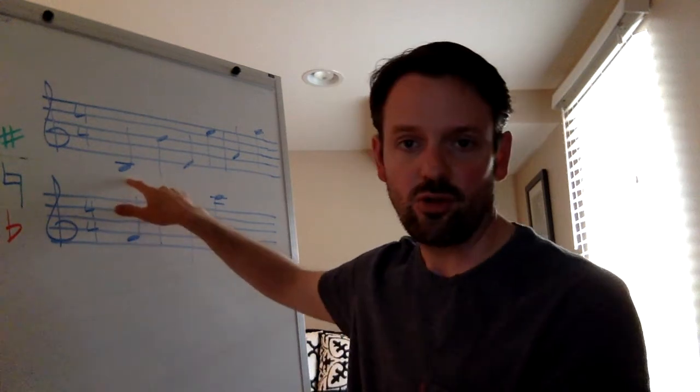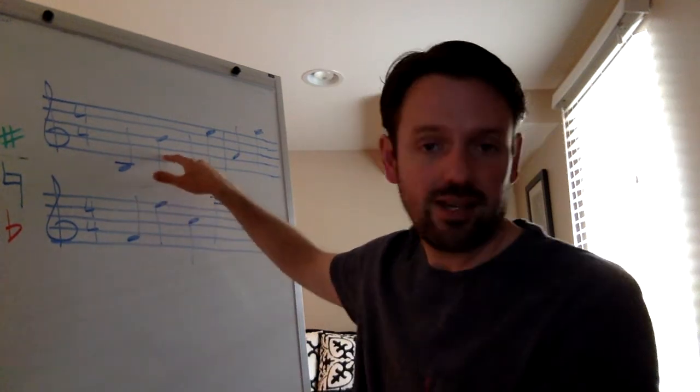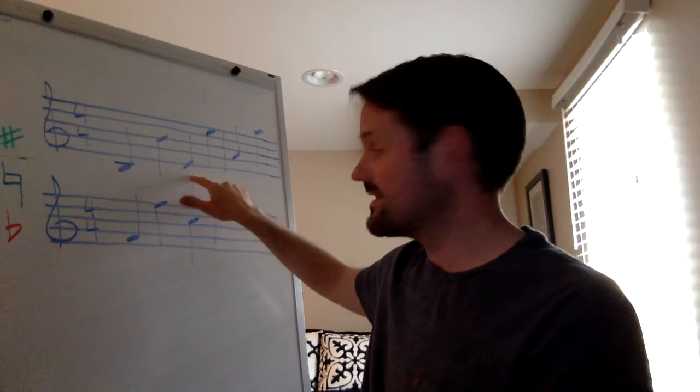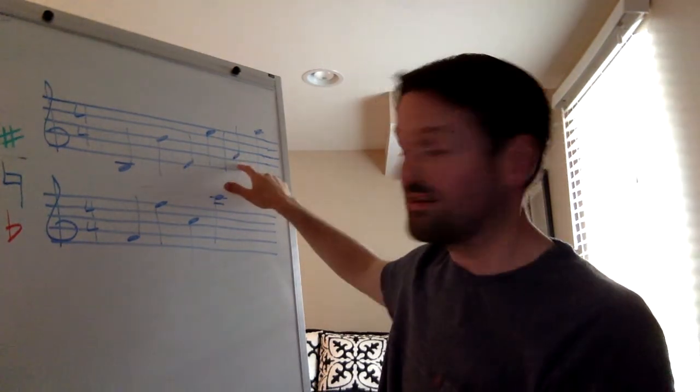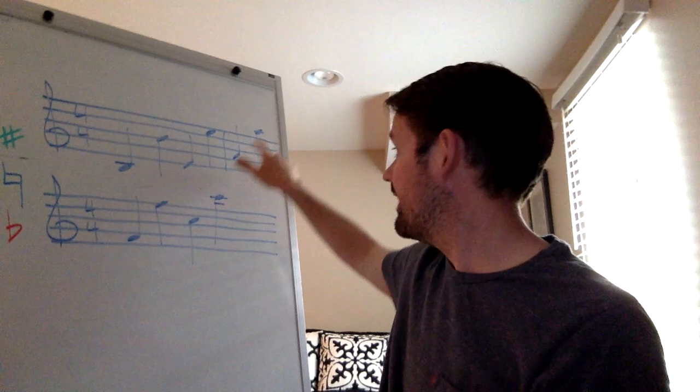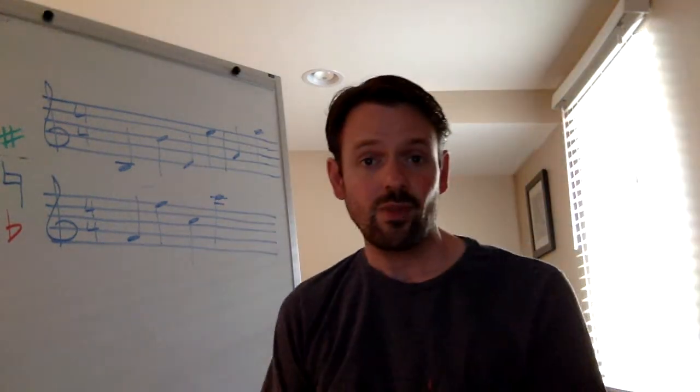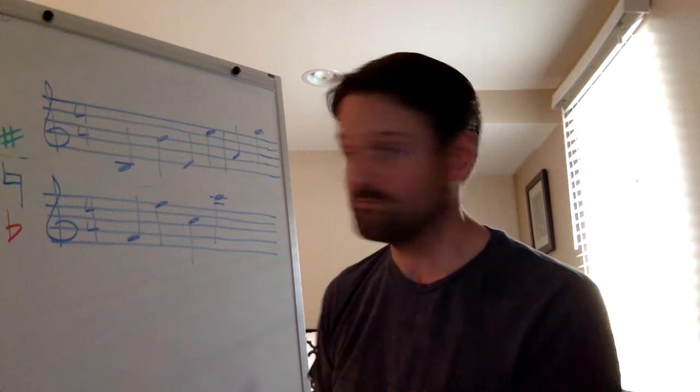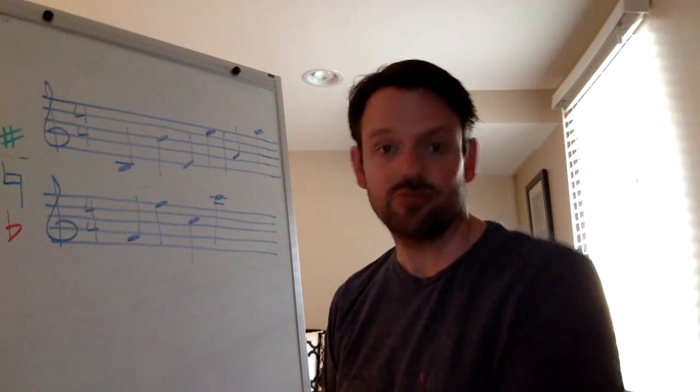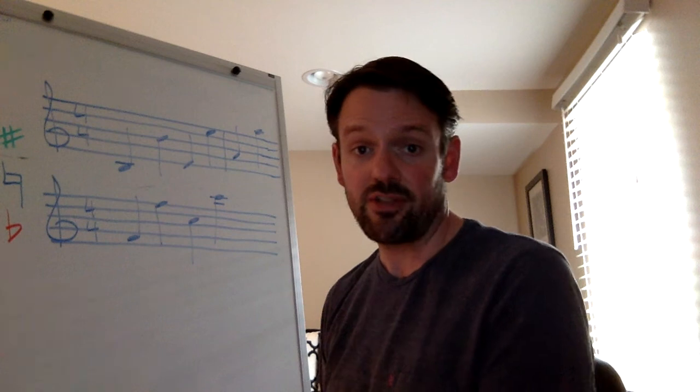So this right here is a low B natural. That's a high B natural. That's an E natural. That's a high E natural. This is an A natural. And that's a high A natural. According to this key signature, all those notes will be played natural because there's no flat signs anywhere, there's no sharp signs anywhere, and there's nothing written in the key signature.